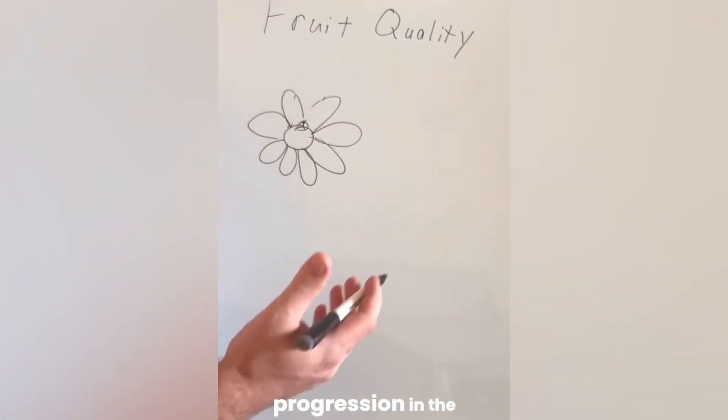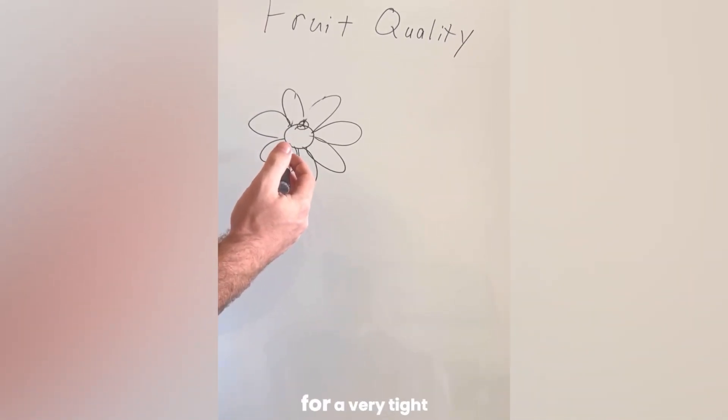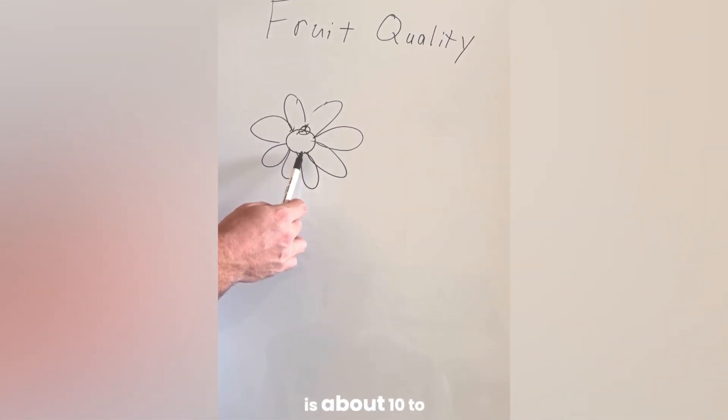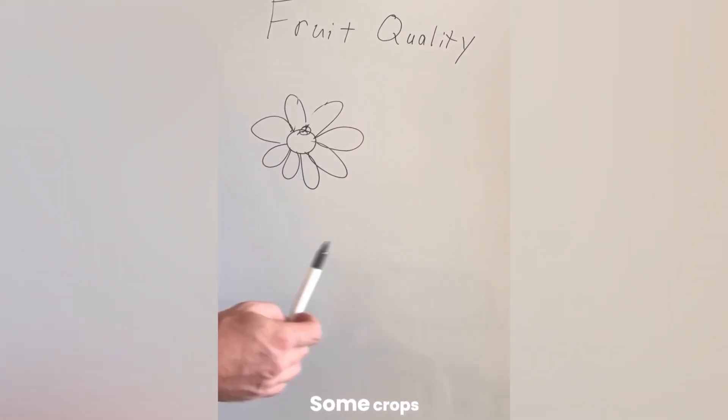Sixteen, thirty-two. You have this geometric progression in the number of cells for a very tight window of time. Most crops, the cell division window is about 10 to 14 days.